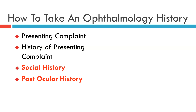We then move on to the past ocular history before we take the past medical history. Details of the past ocular history should include whether the patient has had to wear strong spectacles in the past, whether they have received any medical or surgical intervention for eye diseases, or whether they have been born with eye disease.